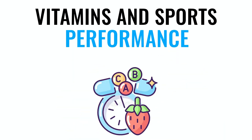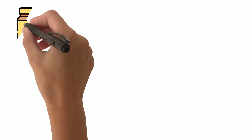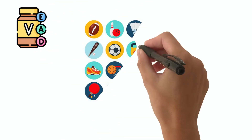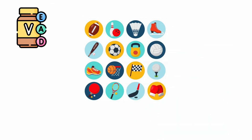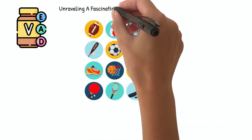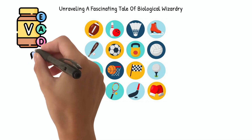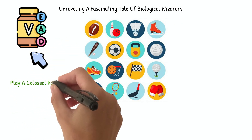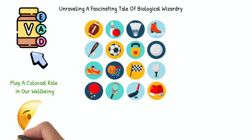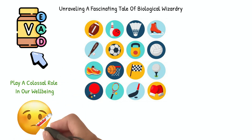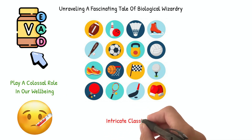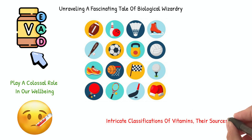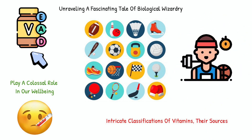Vitamins and sports performance. Embarking on a journey through the world of vitamins and their role in human health, particularly in the realm of sports performance, is like unraveling a fascinating tale of biological wizardry. Vitamins, those tiny organic compounds, play a colossal role in our well-being — without them, our bodies would struggle to function optimally. In this chapter, we'll explore the intricate classifications of vitamins, their sources, and their influence on athletes' health and performance.